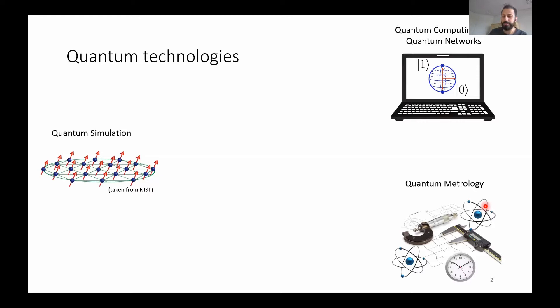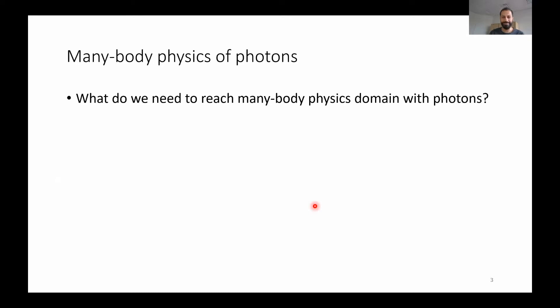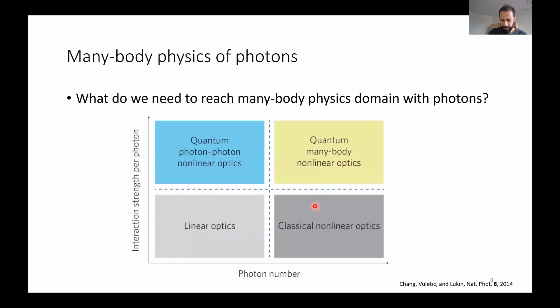If you look at the science at the heart of these technologies, it's basically quantum many-body physics. Understanding quantum many-body systems can help us make advances in these technologies, and if we have advanced quantum simulators and quantum computers, we can learn more about quantum many-body physics. I'm interested in the quantum many-body physics of photons, so the question is: what do we need to reach the physics in this domain? In this review paper from a few years ago, there's a nice figure showing the different areas of optics.